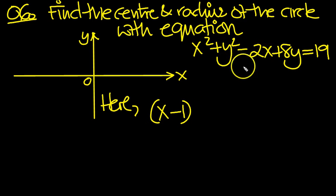Half of this is minus 1, because it's minus 2, so square that, and that gives us the x squared and the minus 2x.